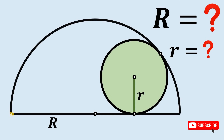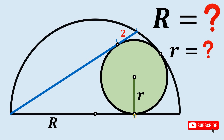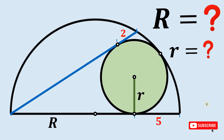Now from this point, let's draw a chord that is tangent to our circle. From this point of tangency to this point we have two units, and from this point of tangency to this other point we have five units. The question is: what is the length of capital R and the length of small r?